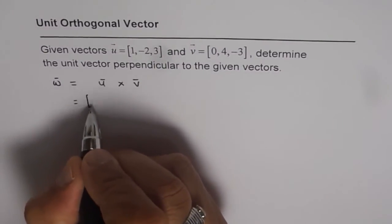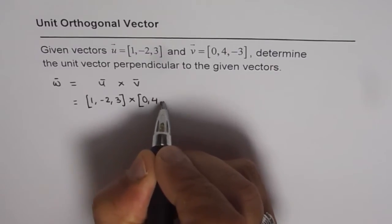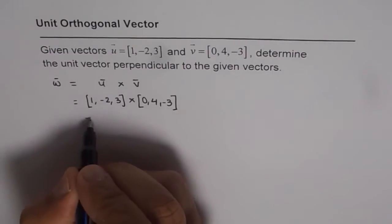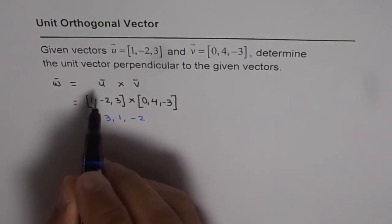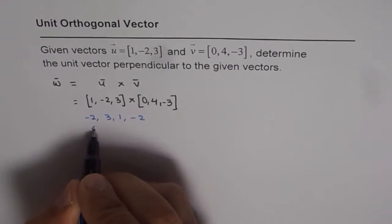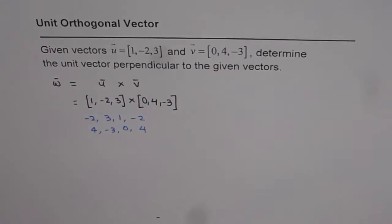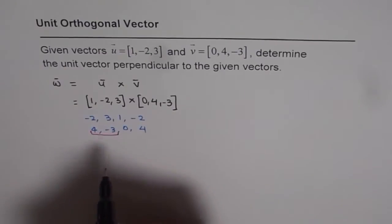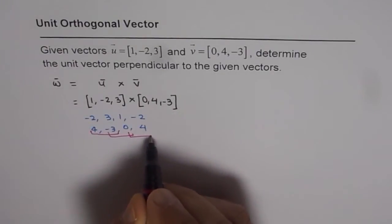u is 1, minus 2, 3 cross 0, 4, minus 3. I will adopt my method of cross product, which writes these numbers starting from the center number: minus 2, 3, 1, ending at the center number — that is for vector u. And then for the second vector, we start with 4, minus 3, 0, and 4. The i components or x components are these, the y components or determinants are these, and the z components are these.